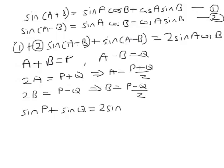Equals 2 sine A, or what's A? We saw it's P plus Q over 2, multiplied by the cosine of B, which is P minus Q over 2.